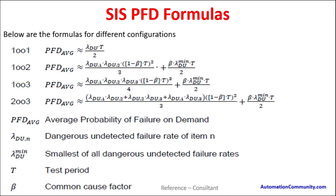Below are the formulas for different configurations — 1oo1, 1oo2, 1oo3, 2oo3, etc. Viewers can go through these formulas themselves. These are the different configurations based on which the different PFD average formulas are derived. PFD average is the average probability of failure on demand. Here, lambda_du is the dangerous undetected failure rate of each item; lambda_du_min is the smallest of all dangerous undetected failures; t is the test period; and beta is the common cause factor.